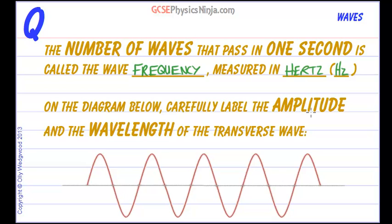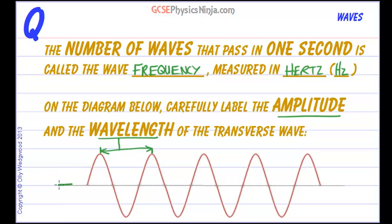On the diagram below, carefully label the amplitude and the wavelength of this transverse wave. The wavelength is most easily found by measuring the distance from one peak to the next peak — so that is the wavelength. Now, the amplitude is the one which gets most people because they think it is the distance from the top to the bottom, but it isn't. The amplitude is always measured from the centre line to the top. You could do it from the centre line to the bottom as well — that's fine. But the amplitude is best measured from the centre line of the wave to the peak of one of the waves.